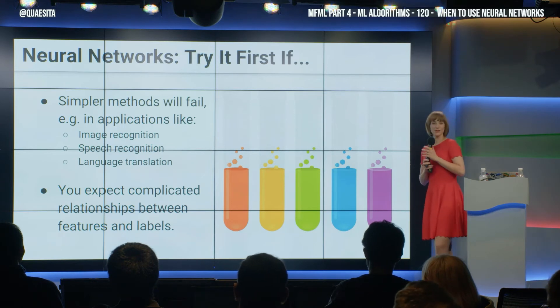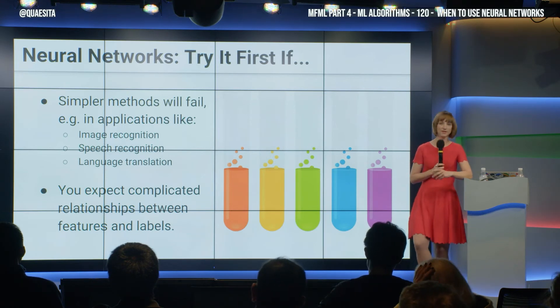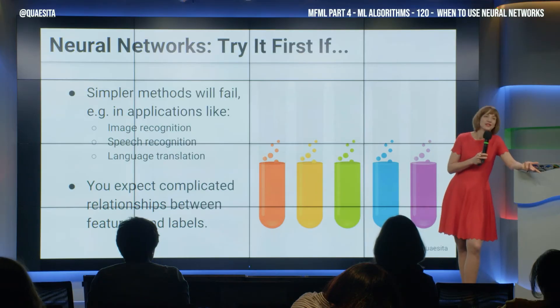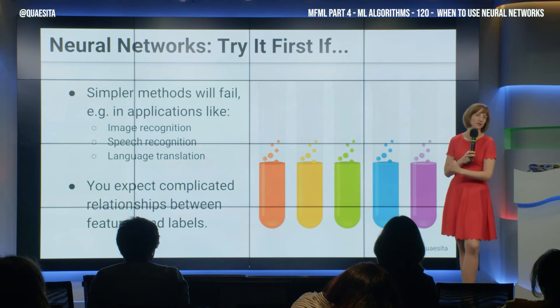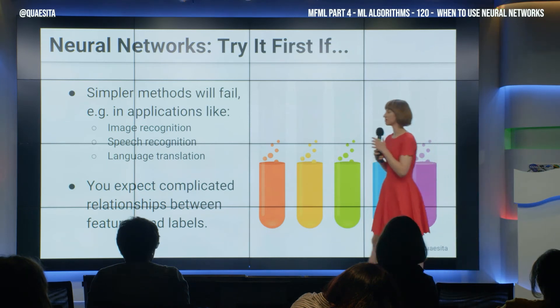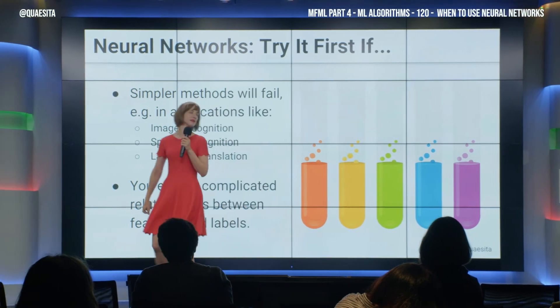Neural networks — there is a 'try it first' section here. There are good reasons for this to be the first thing you try. Those good reasons are that you know everything else is not going to work because other people have already tried similar applications to yours, and they figured out that it's useless to try to attack it with a line or a tree or whatever else. I wouldn't try something else for images. If I'm doing image classification, I just go right to neural networks — I learn from the mistakes of others. Speech recognition, language translation is the same.